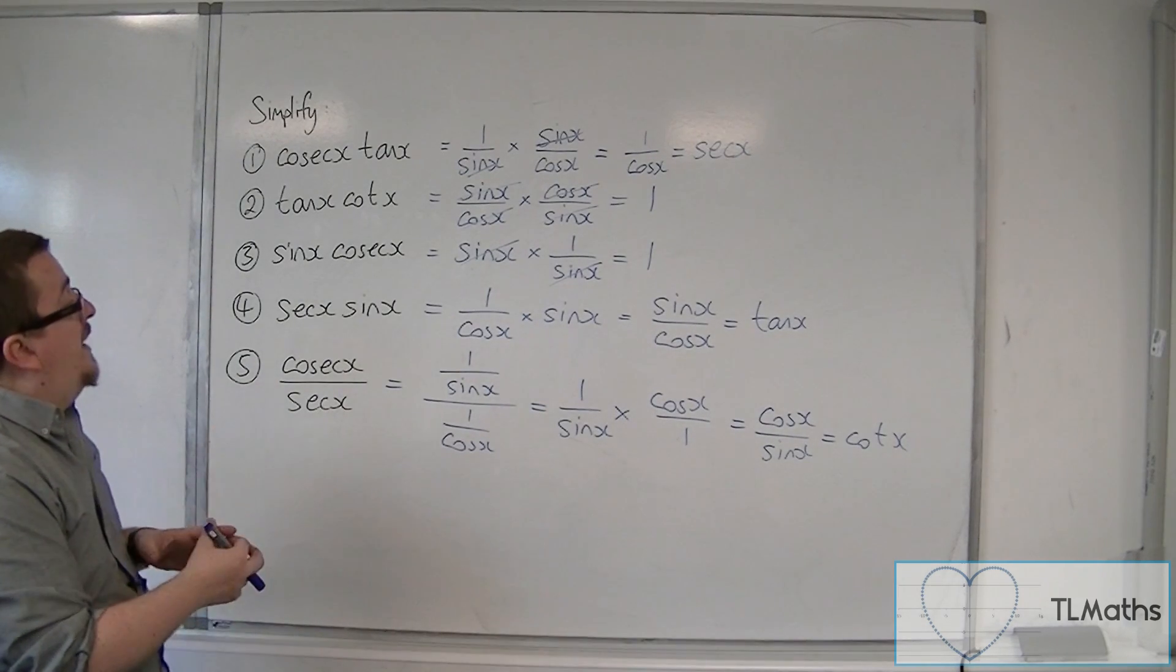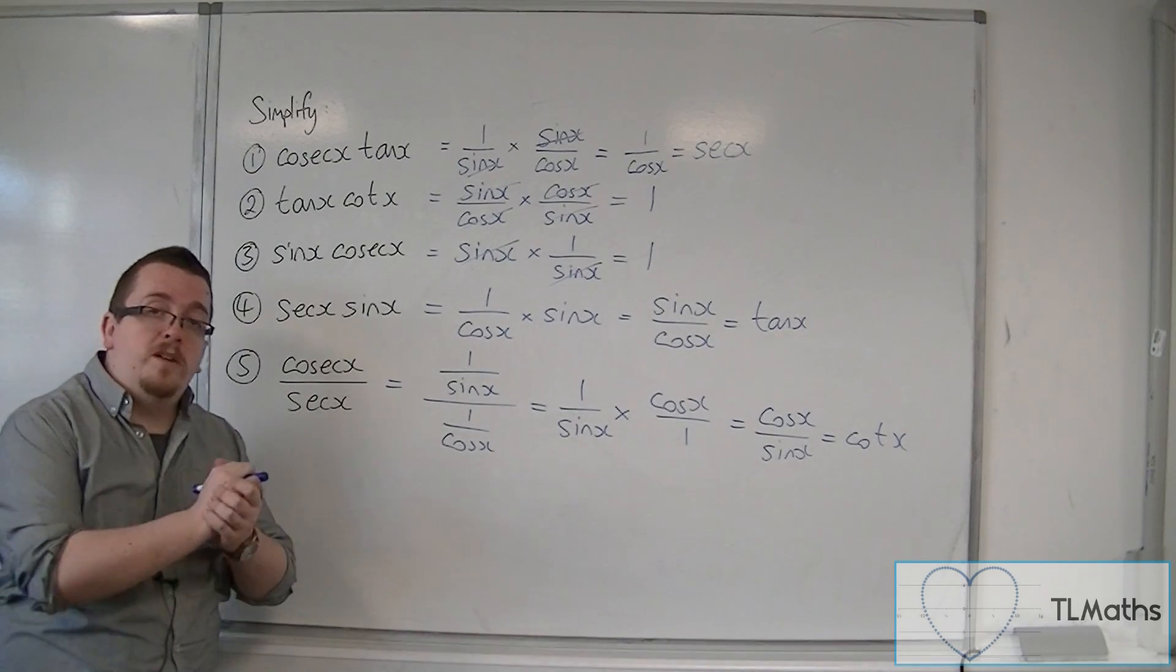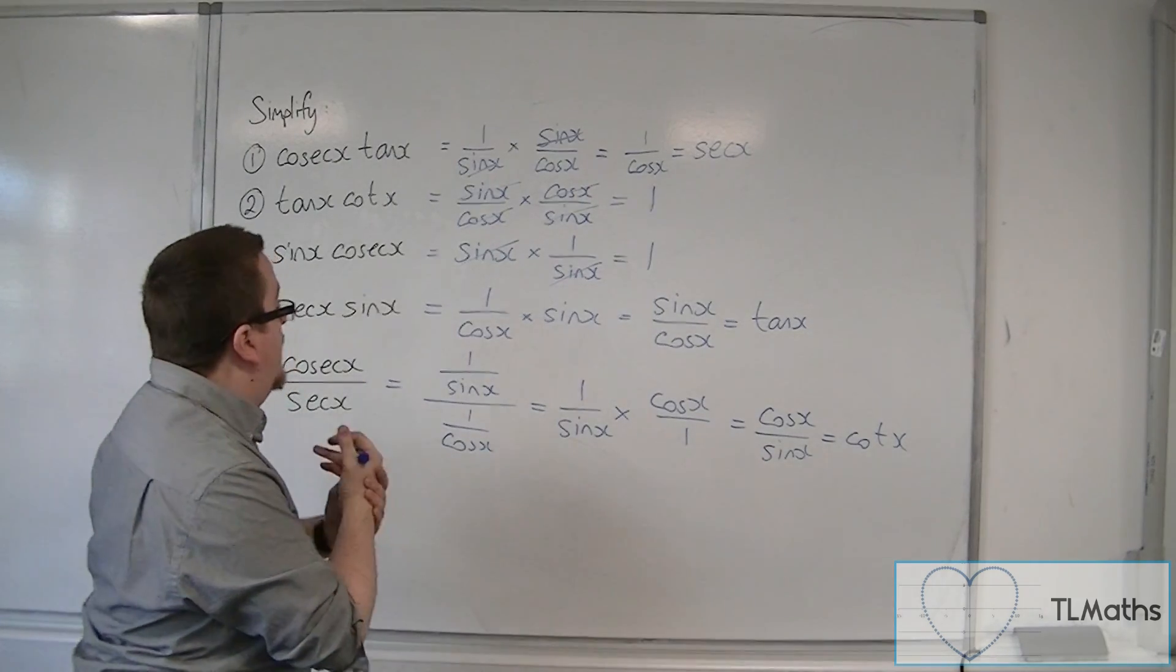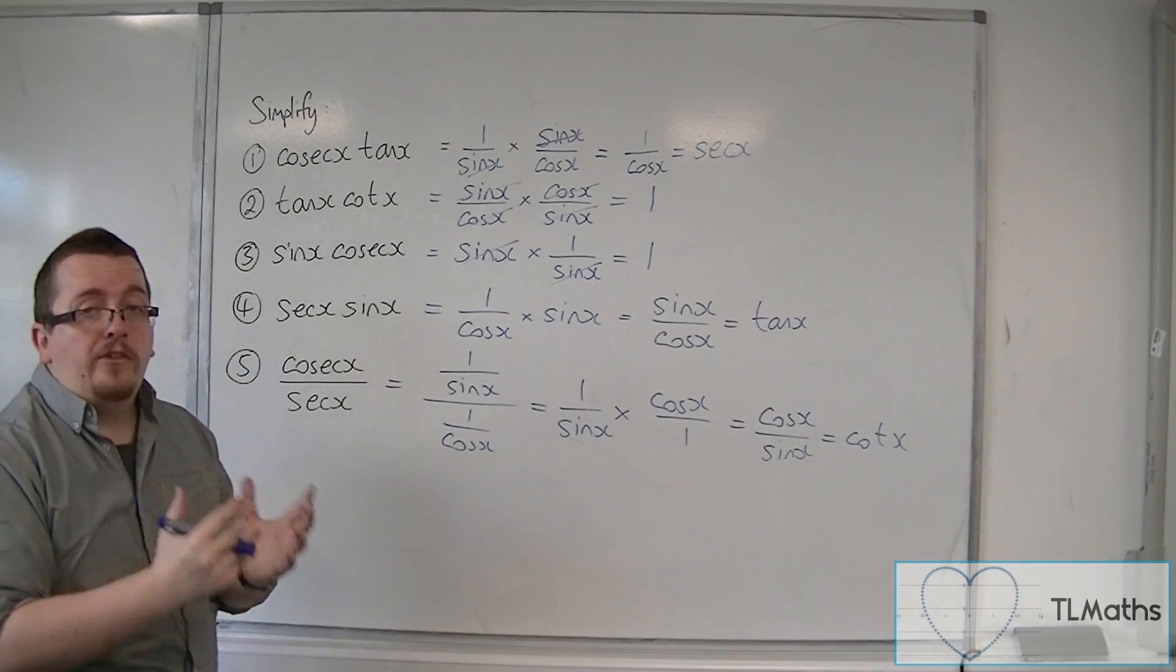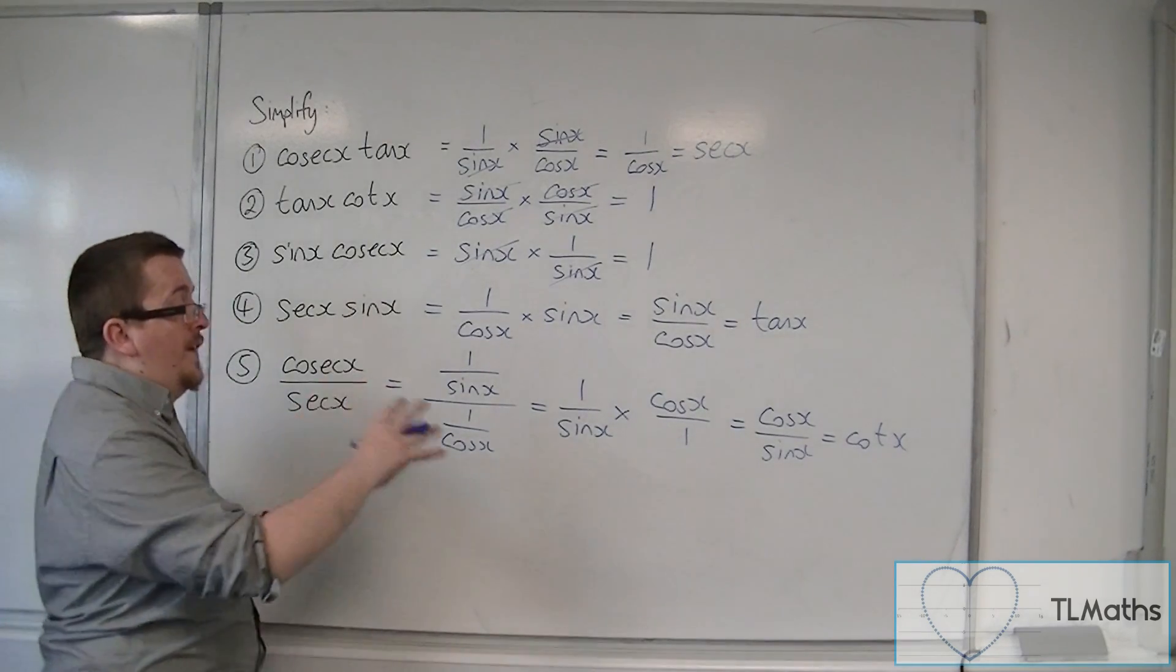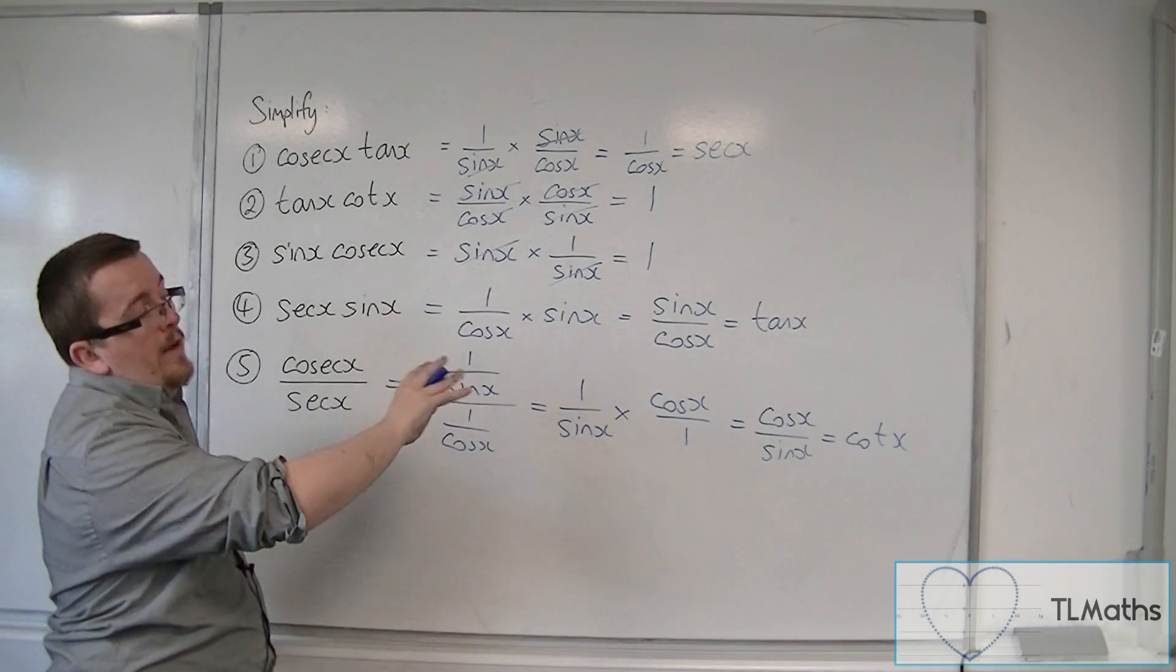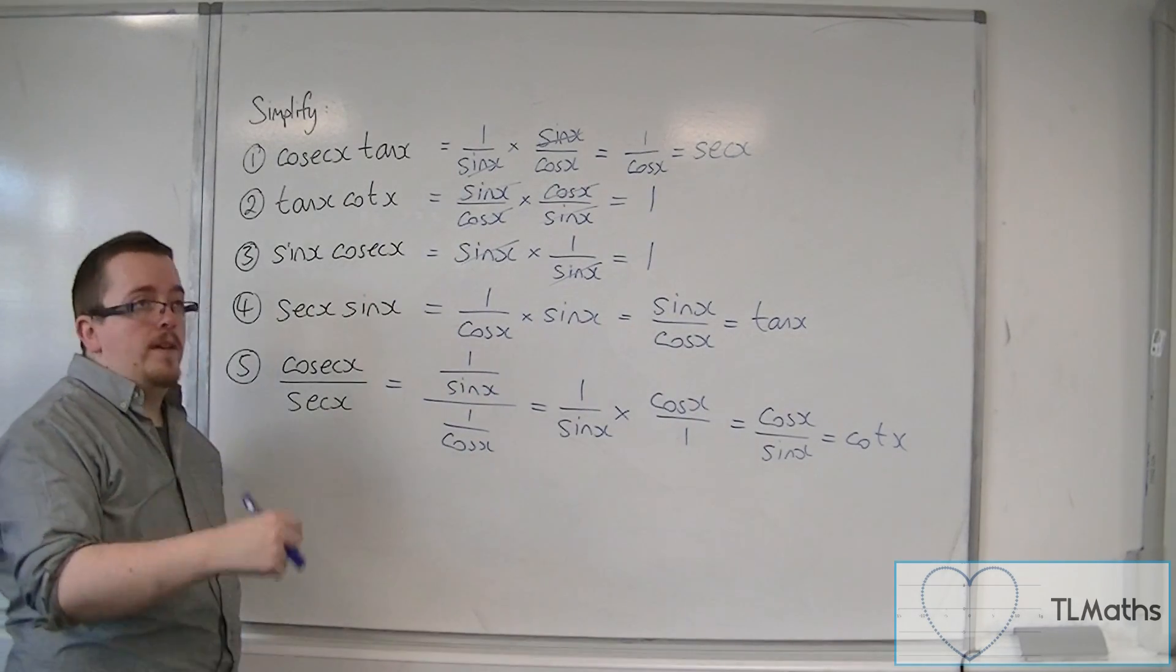So this is how we can simplify trigonometric expressions like this. And a good method to use, change everything into sines and cos's and see what cancels out. And then finally write an answer where it is simplified down to one trig function, if you can.